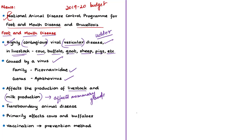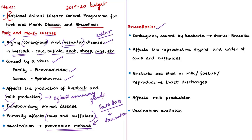FMD is a trans-boundary animal disease — it spreads from one country to another — and is endemic and widely prevalent in South Asia with outbreaks at regular intervals. It can be controlled by mass vaccination of cattle at regular intervals until incidence comes down to negligible levels. FMD primarily affects cows and buffaloes. Brucellosis is also a contagious disease caused by a bacteria belonging to the genus Brucella. In cows and buffaloes, the disease affects the reproductive organs and the udder. The bacteria are shed in milk or via the aborted fetus or other reproductive tract discharges, and transmission occurs by direct contact with affected animals or contaminated environments.